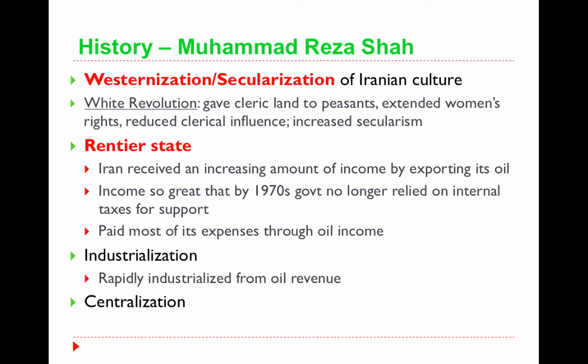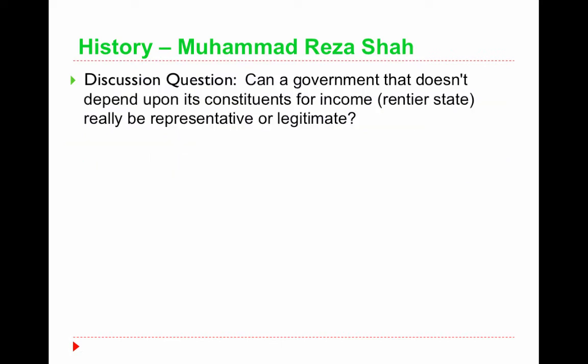Industrialization was a result of this oil revenue, allowing Iran to modernize very quickly. We also continued to see centralization. All of these things — secularization, modernization, oil dependency, and centralization — would produce a major backlash with the revolution of 1979 that brought about the Iran we mostly know today.